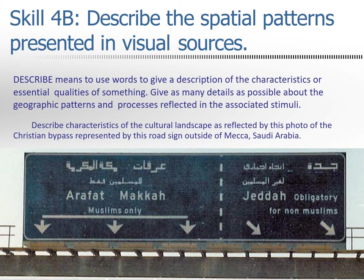Describe the characteristics of the cultural landscape as reflected by this photo of the Christian bypass represented by a road sign outside of Mecca, Saudi Arabia. You could talk about language here, religion, landscapes set up for specific pilgrimages, the impacts of those pilgrimages, and infrastructure. There are a number of different geographic concepts you could apply just from looking at this one road sign.